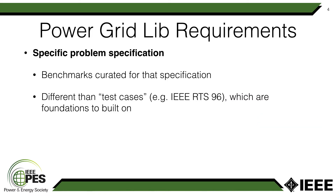Power Grid Lib makes specific requirements of all the types of repositories that it hosts. Those requirements include that there must be a specific problem specification which is being optimized, so these benchmarks are curated for a very specific problem specification. This is quite different than traditional test cases like the RTS 96 test case, which are really designed to be foundations which you can then build upon.